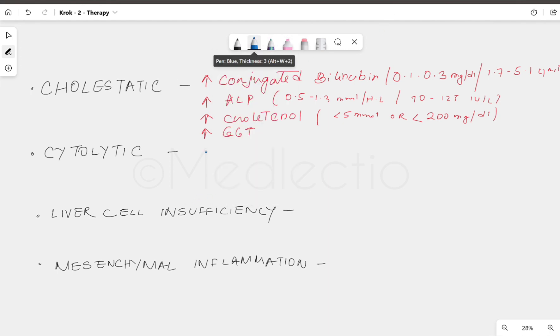In cytolytic, we get increased AST, ALT (the liver enzymes), and total bilirubin also increases. Here the range is 0.3 to 1 mg/dL or 5 to 20 micromole.